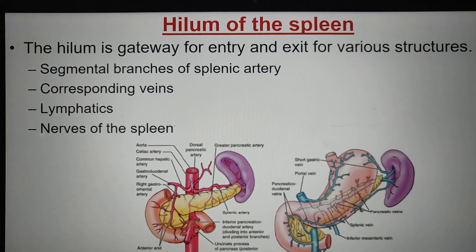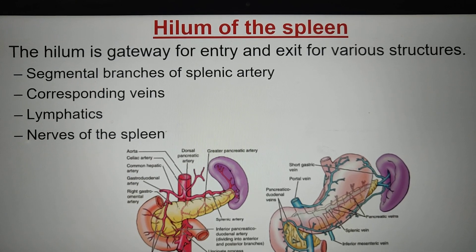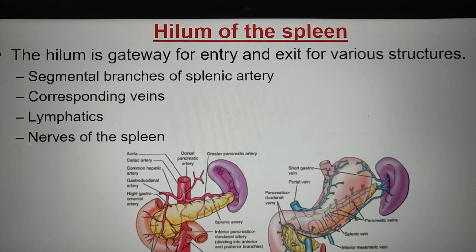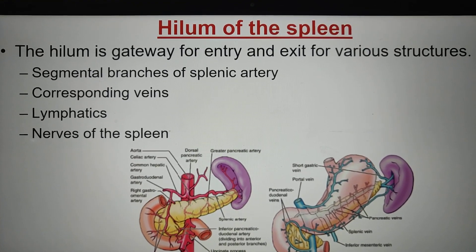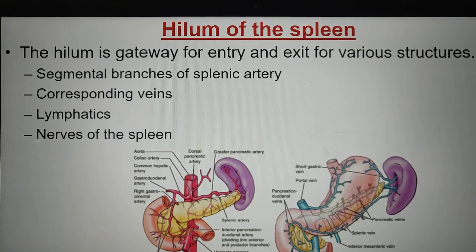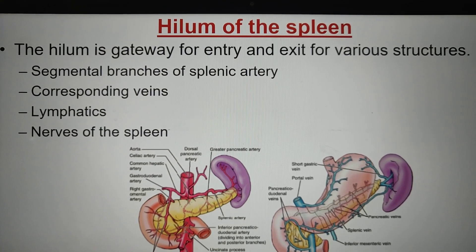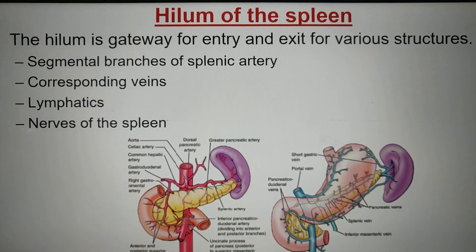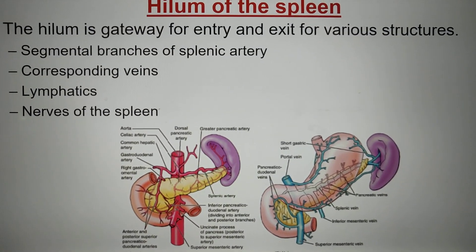The hilum of the spleen is the gateway for entry and exit of various structures — mainly the segmental branches of the splenic arteries, corresponding veins, lymphatics, and nerves of the spleen.